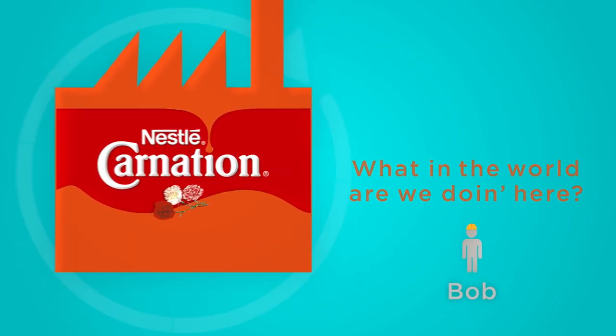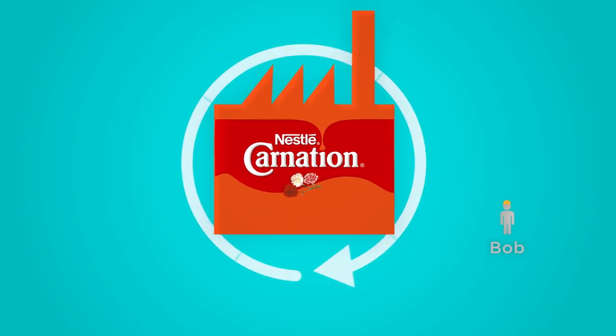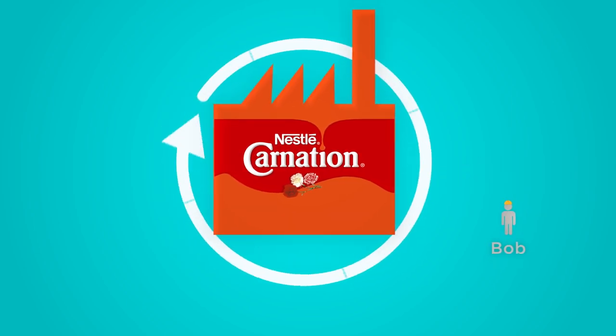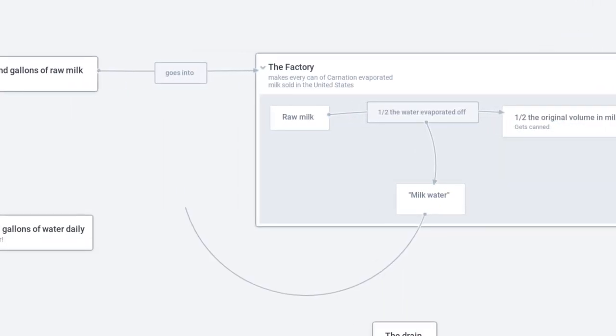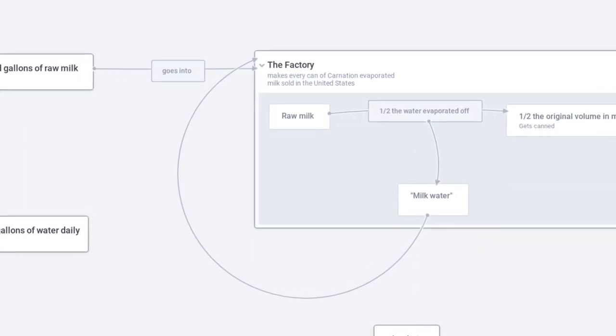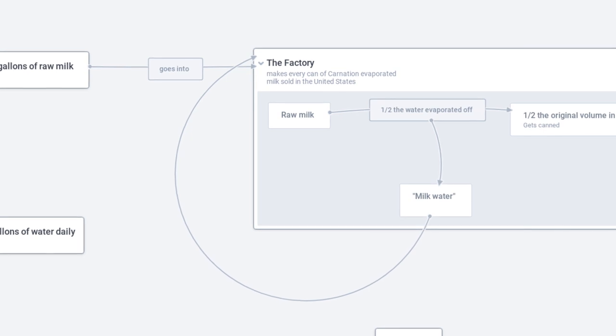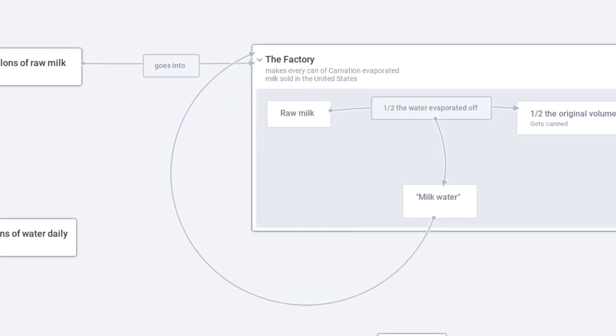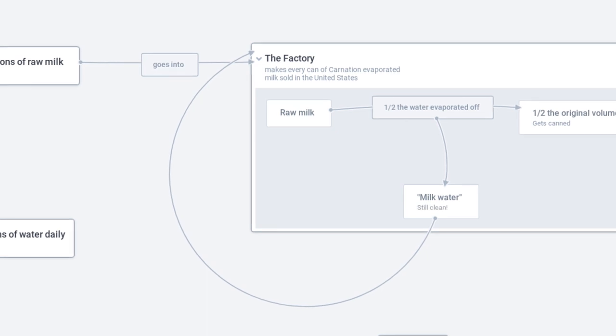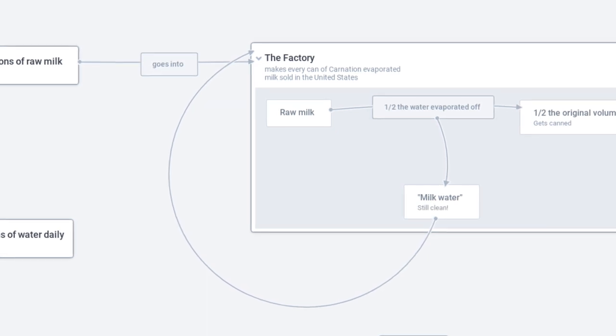That Carnation plant has now, if it hasn't become a zero-water factory at this moment, it will in the next few months. They are going to use the water that they have been evaporating off the milk and throwing away to run the factory. Why not? By the way, it's called milk water, but it's actually pretty clean at the moment it flashes up off the milk, right?